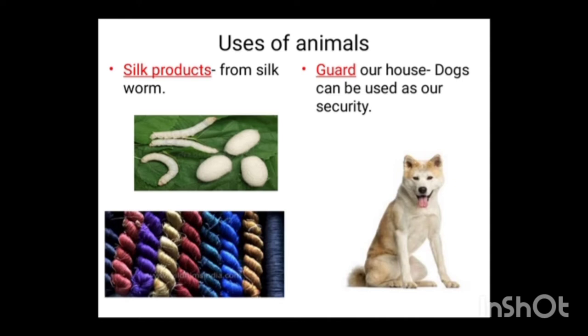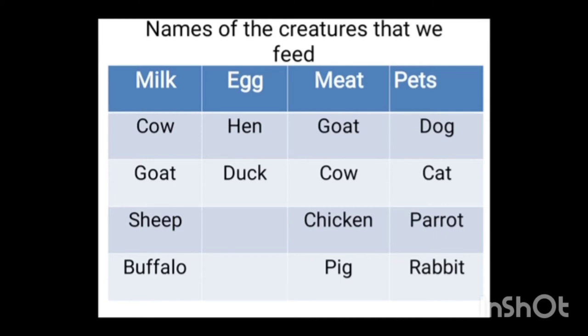Now, animals that give us milk are: cow, goat, sheep, buffalo. For eggs: hen, duck. For meat: goat, cow, chicken, pig, etc. Some animals we also use as pets — dog, cat, parrot, rabbit, etc.